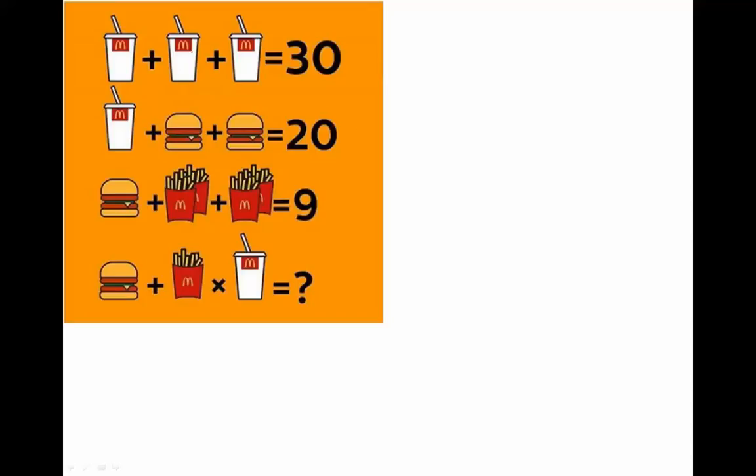So we just have to figure out what they represent. For this top line, we have three drinks equaling 30 and they're all being added together. And so the only way that could happen would be if they're all 10, right? That's 10 plus 10 plus 10 equals 30. So the drink equals 10.